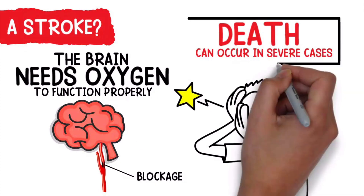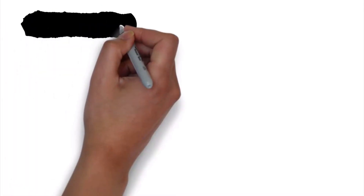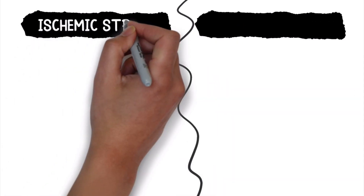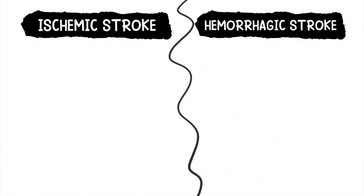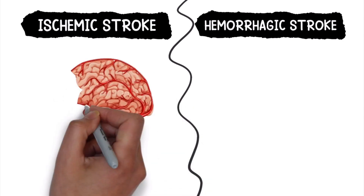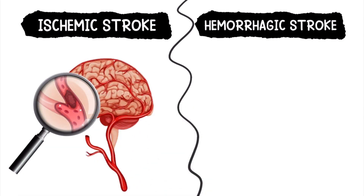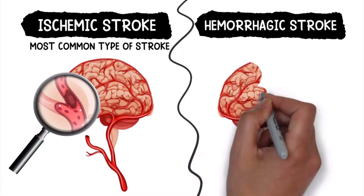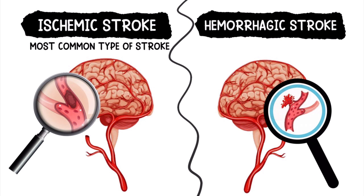Death can occur in severe cases. There are two types of strokes to be familiar with: ischemic stroke and hemorrhagic stroke. An ischemic stroke occurs when there is a blood clot or blockage in the vessels that transport blood to the brain — this is the most common type of stroke. A hemorrhagic stroke, on the other hand, occurs when a blood vessel ruptures and results in blood leakage that causes damage to tissues within the brain. This type of stroke is often due to high blood pressure.